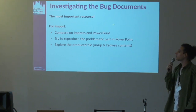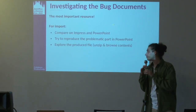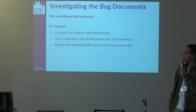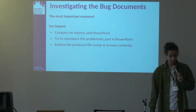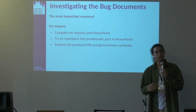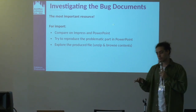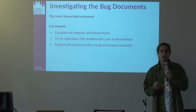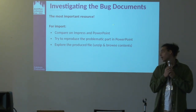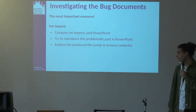The most important resources are the bug documents in the attachment. For import bugs, we need to compare how it appeared in PowerPoint versus how it appears in Impress. We need to try to reproduce the problematic part in PowerPoint. If you can find how it was done through the PowerPoint UI, it's better because we can create lots of variations. Doing one thing in office software can be achieved in many different ways — for example, setting transparency can be done on text, on the box, or on a group shape.